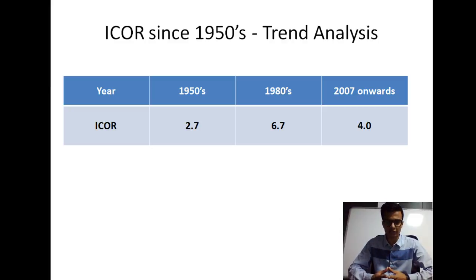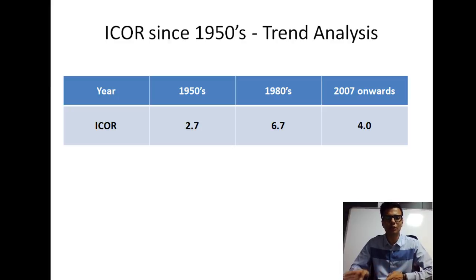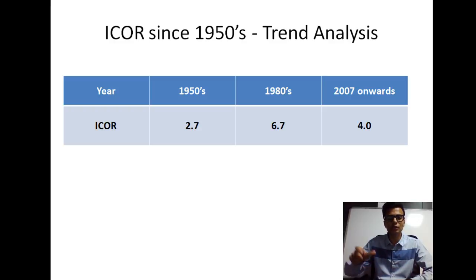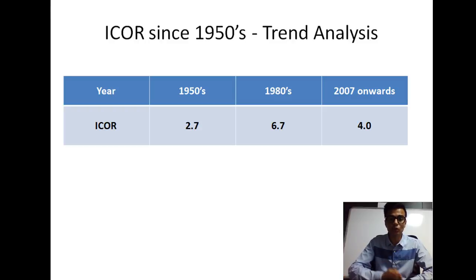ICOR stands for Incremental Capital Output Ratio. It measures how much additional capital is required to produce one additional unit of output. So even for ICOR, the lesser the ICOR the better it is.